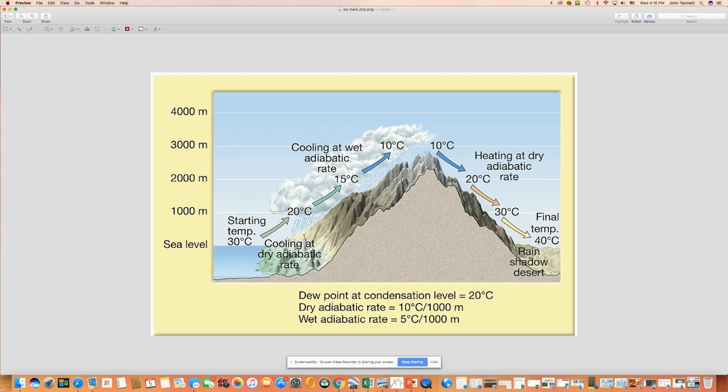We've seen that processes that lift air up cause the air to expand and cool, reach the dew point, and then we have clouds or precipitation. One of the things that can cause air to be lifted up is orographic lifting. This is when it moves over a mountain range—that's what orographic means, it refers to mountains.